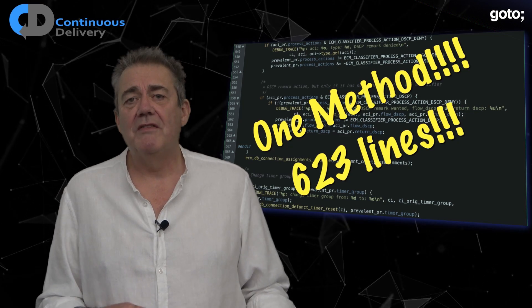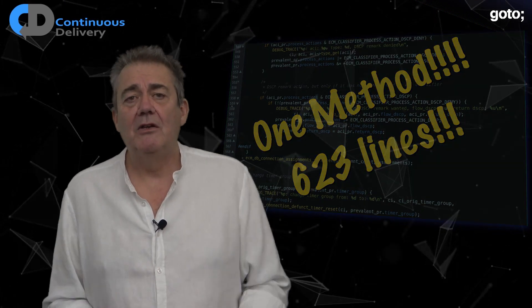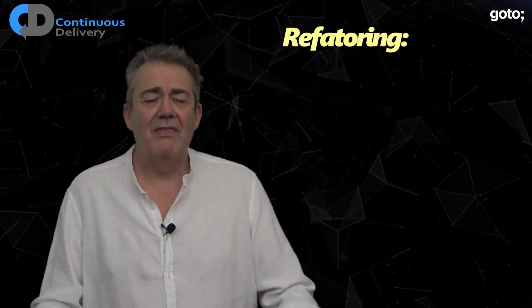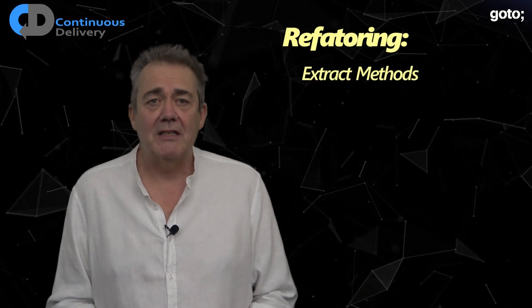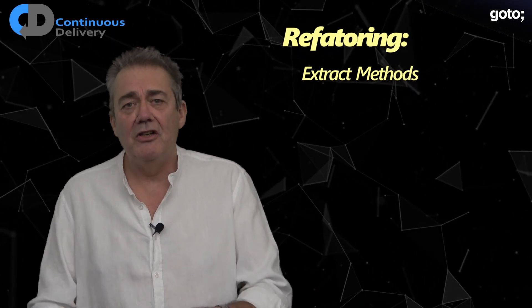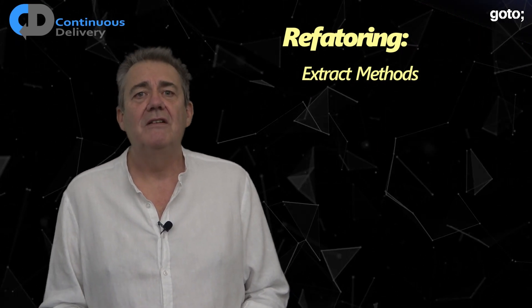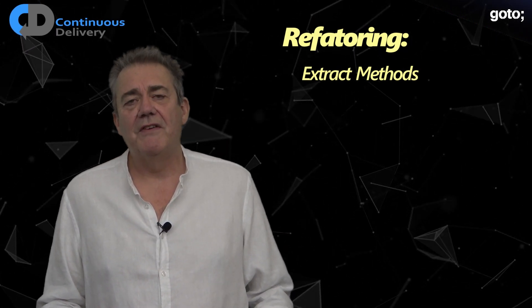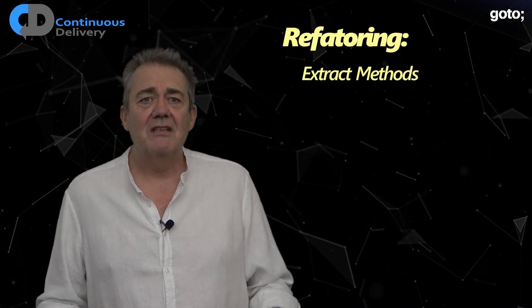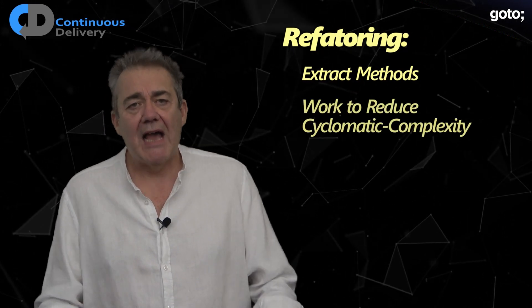The answer to long methods is refactoring. Here are a few thoughts: the most valuable technique I use most is extract method. We select a block of code and give it a name by extracting it as a new method — now our code starts to describe a little more about what it's trying to achieve. This is probably the most useful tool in the refactoring toolchest. It allows us to simplify the code in front of us by giving it a descriptive name.